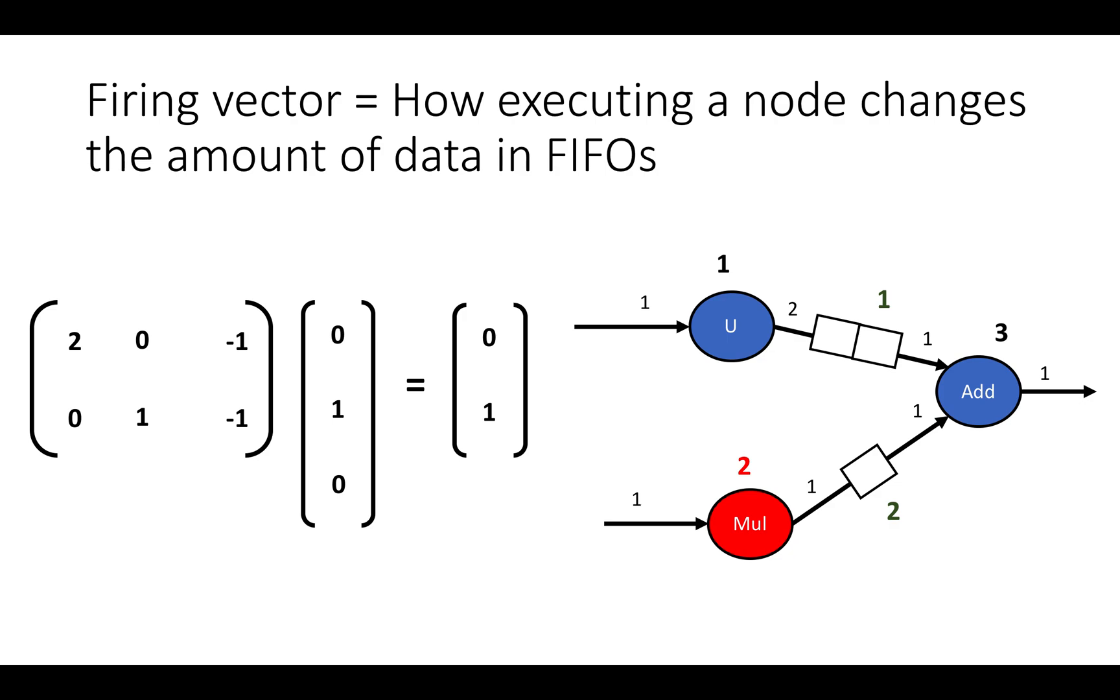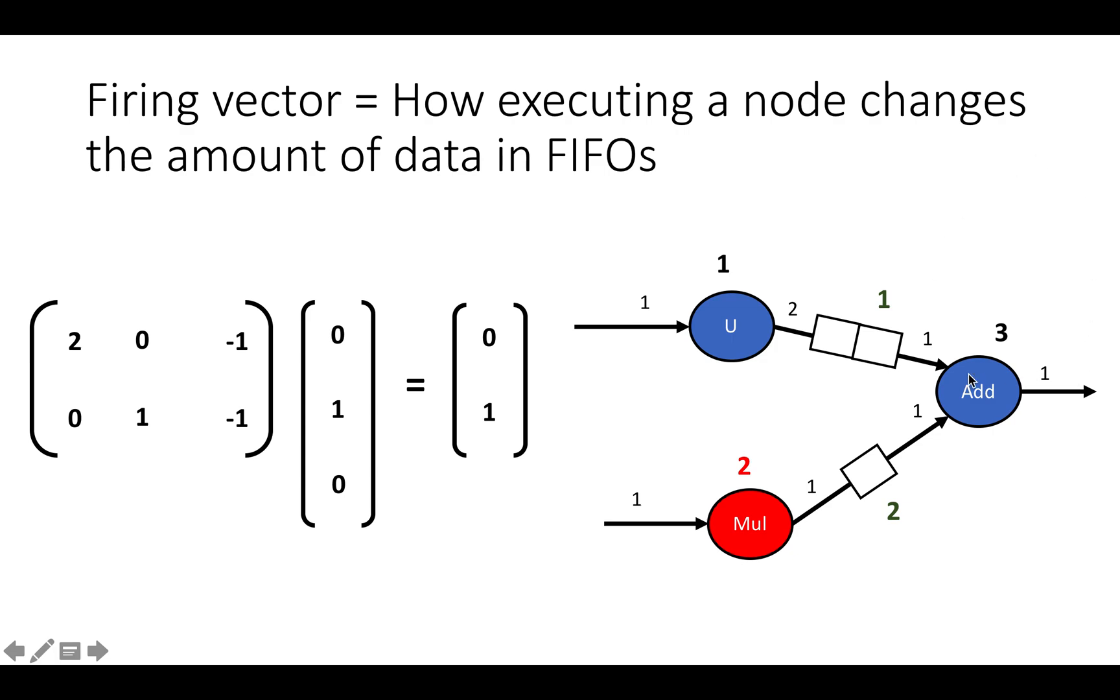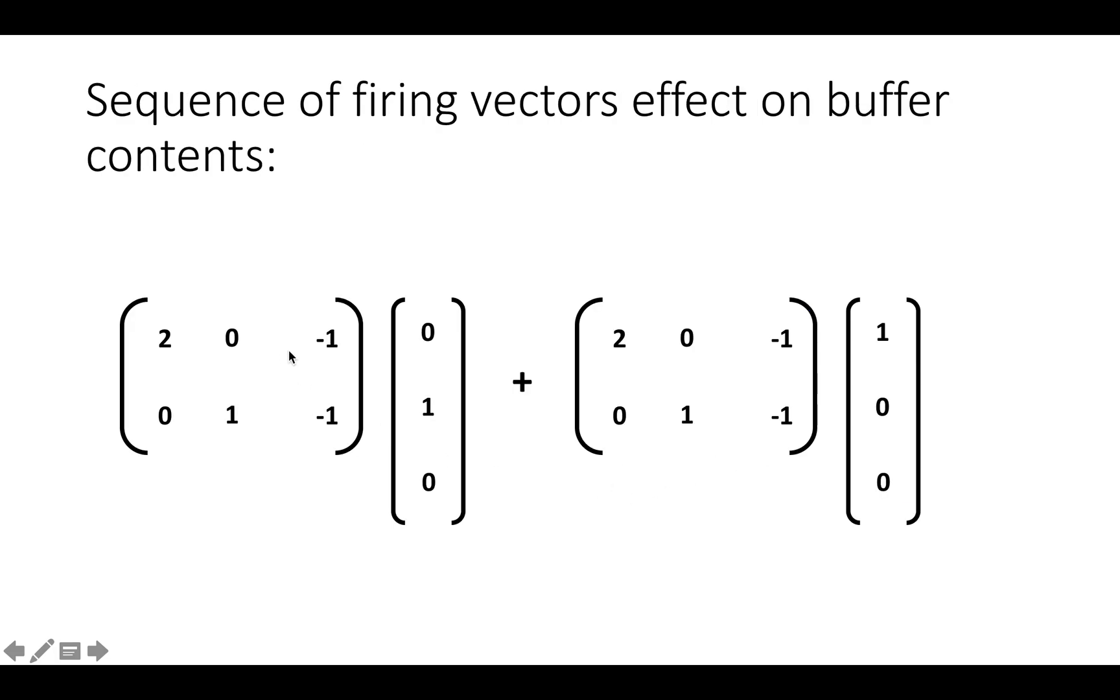The reason this is helpful is once we have this formulation, we can actually see that the effect of a sequence of node firings can also be computed from this representation. So suppose we fire a sequence of nodes, let's say it's two nodes, we fire node 2 and then node 1, so in this case it would be the multiply and then the upsample.